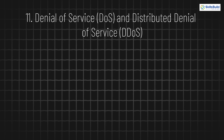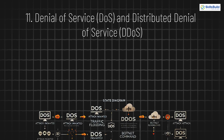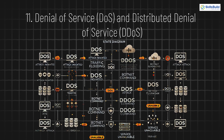11. Denial of Service (DoS) and Distributed Denial of Service (DDoS). DoS and DDoS attacks flood a network or website with overwhelming traffic, causing it to crash and become unavailable. While DoS comes from a single source, DDoS uses many different machines, often as part of a botnet, to launch a much more powerful attack.